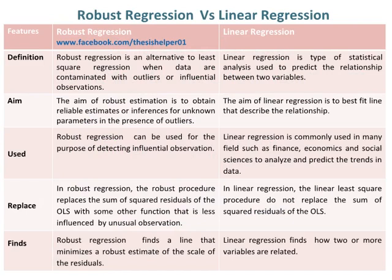Linear regression is a type of statistical analysis used to predict the relationship between two variables. The aim of robust estimation is to obtain reliable estimates or inferences for unknown parameters in the presence of outliers, whereas the aim of linear regression is to find the best fit line that describes the relationship.